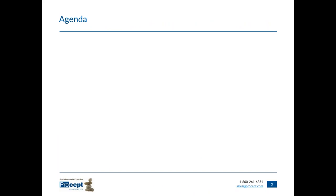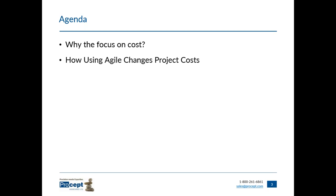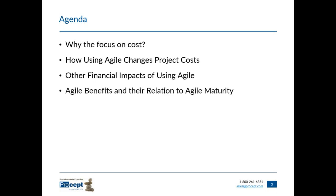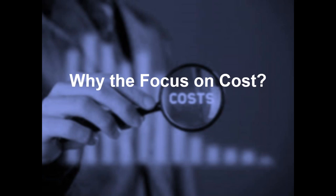Our agenda for today: first, why do we care about costs, especially related to agile? Why is there a concern about costs on agile projects? How does agile change how project costs are accumulated? Are there other financial impacts beyond costs that we can get from agile? And how are agile benefits tied to different levels of agile maturity?